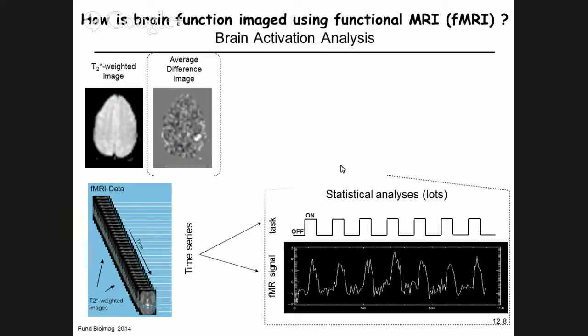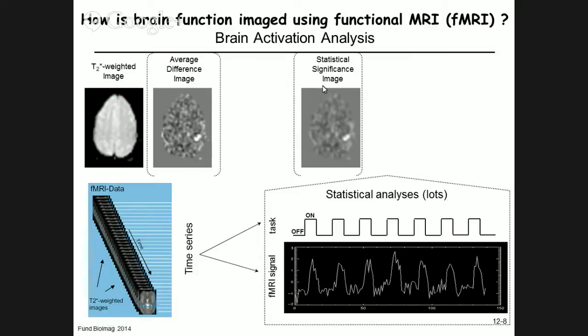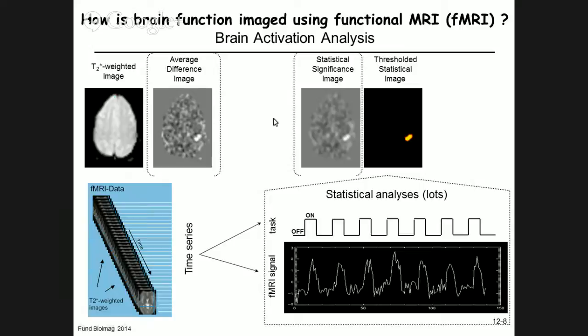After statistical analysis, one obtains a statistical significance image — a T or Z-score map — telling you the probability that a particular pixel is correlated to the task. The data are noisy, so one applies thresholding: Z-scores considered statistically insignificant are set to zero and don't appear in the map; the rest are color-coded according to statistical strength.